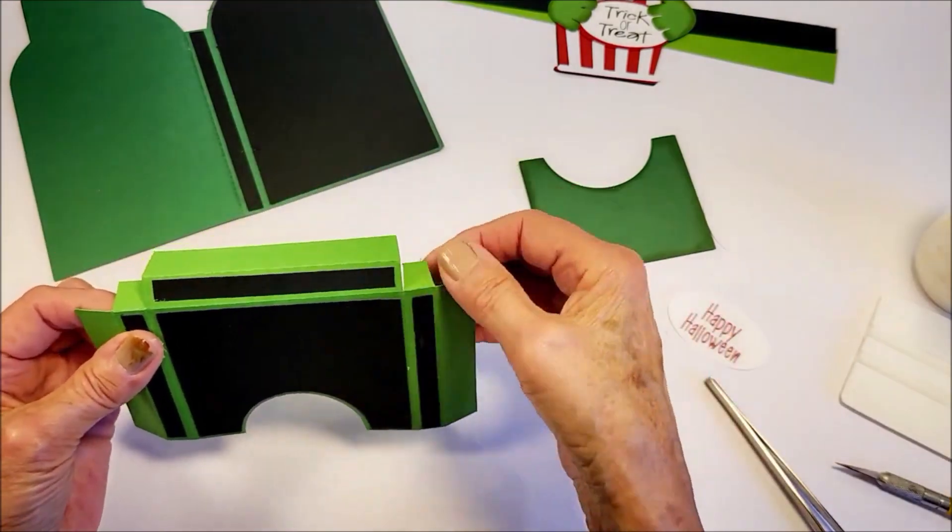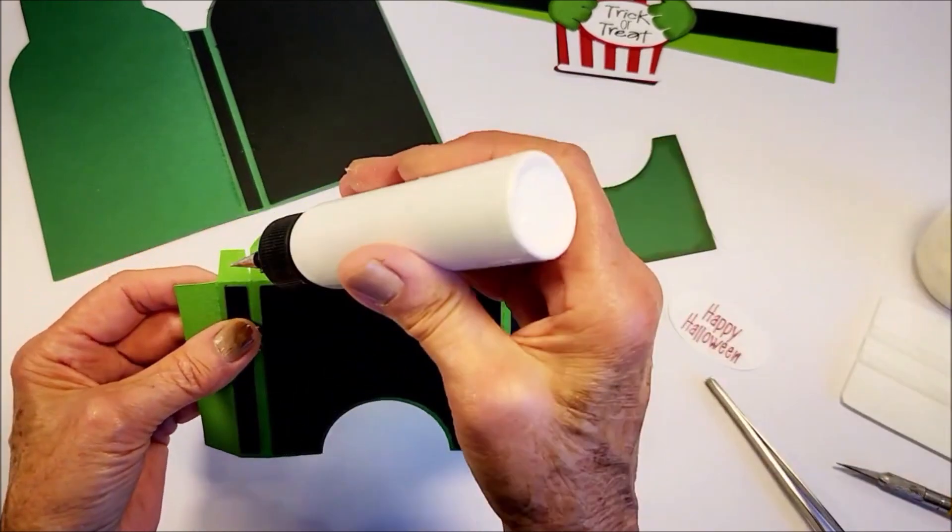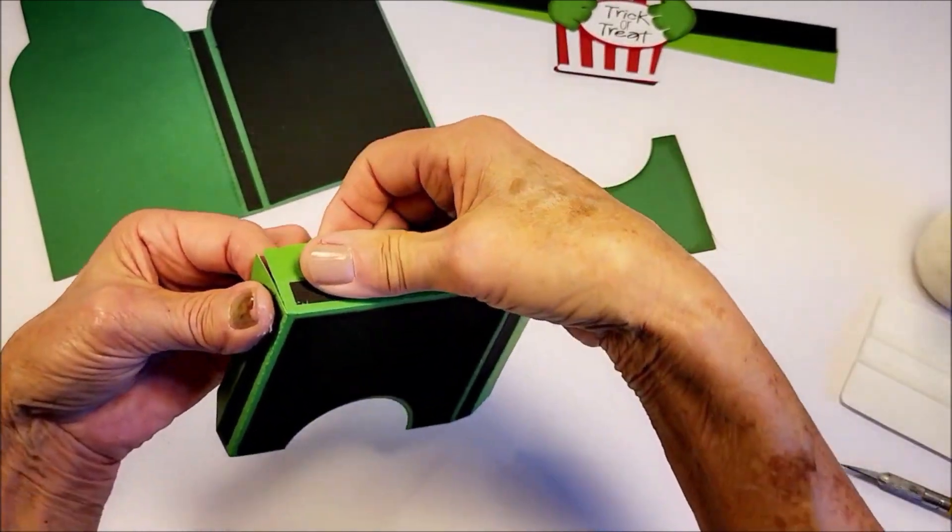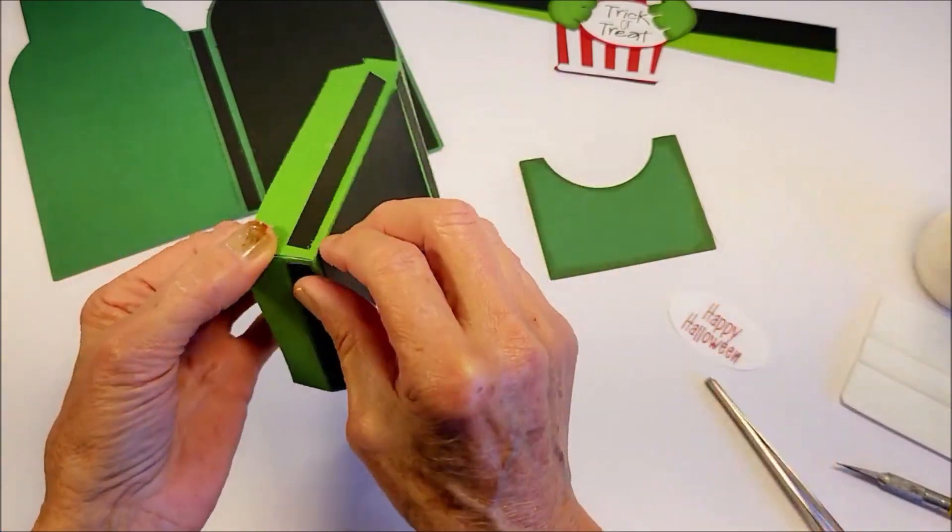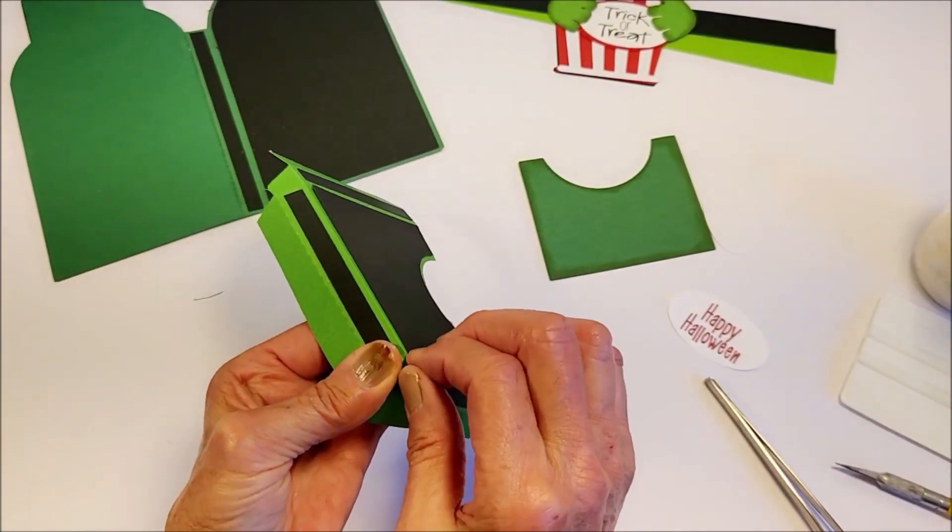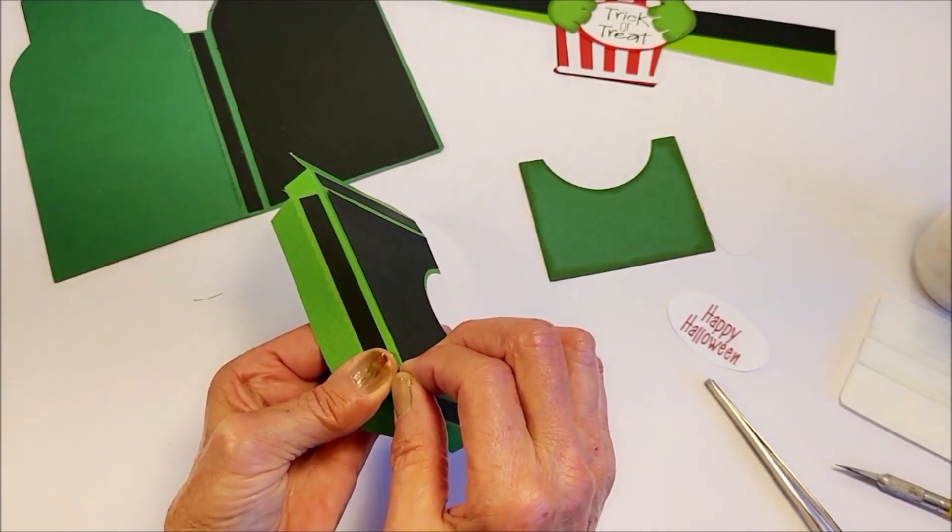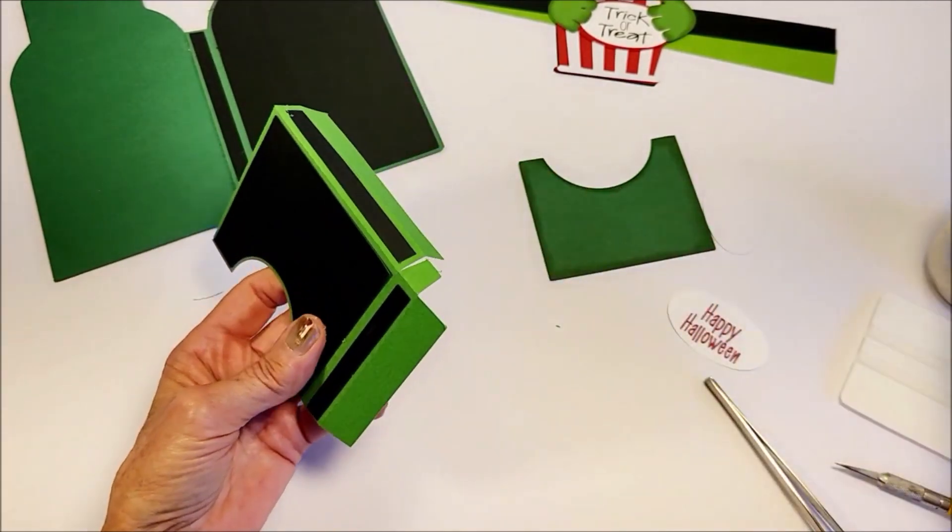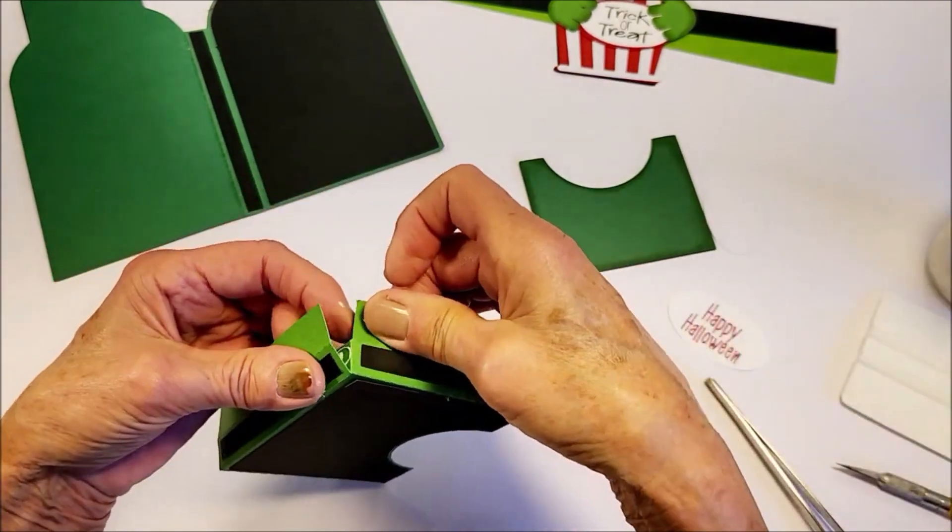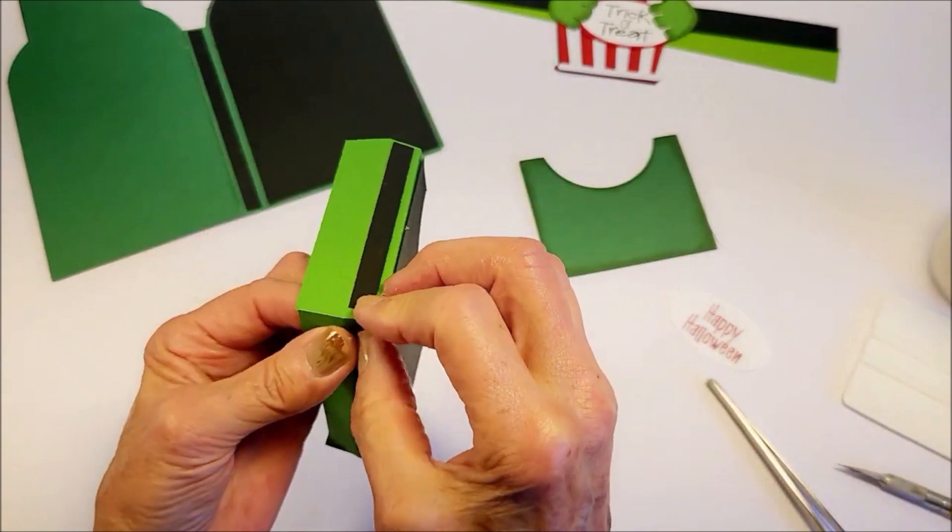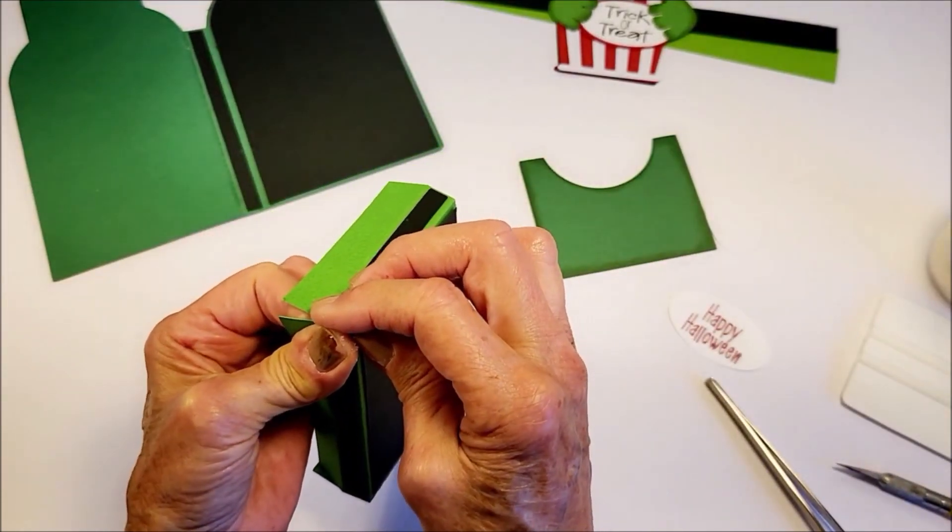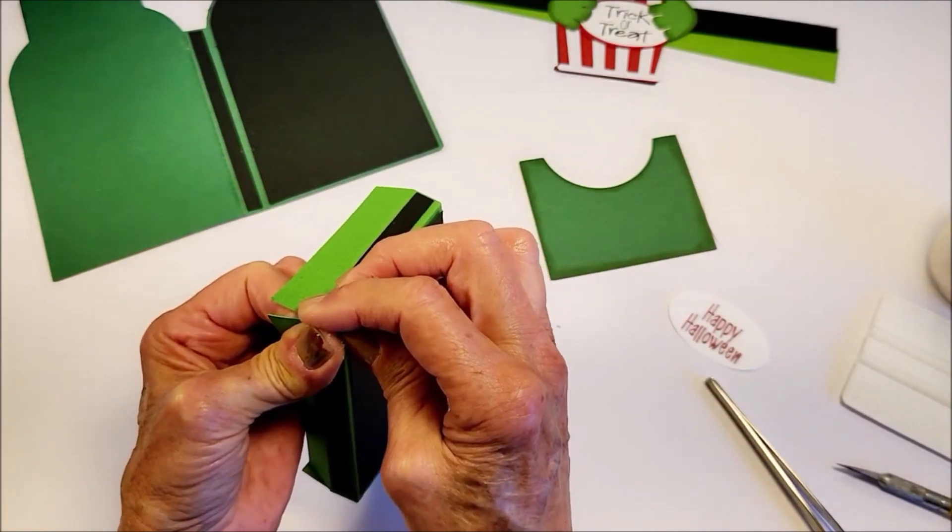And then I'm going to glue down these two tabs one at a time, and hold that there for a second to let it dry. This is the pocket where we're going to slip in the popcorn wrap.